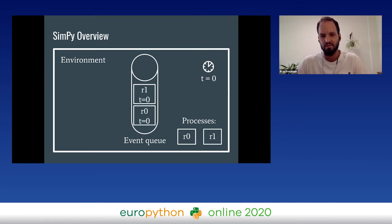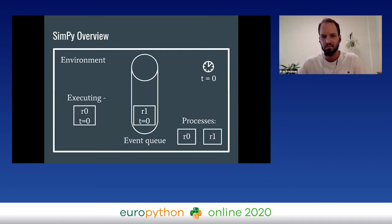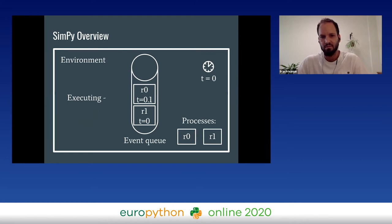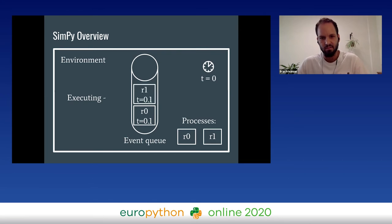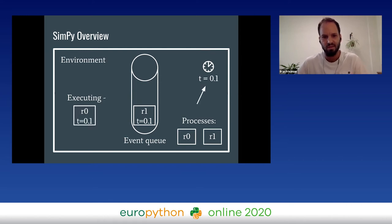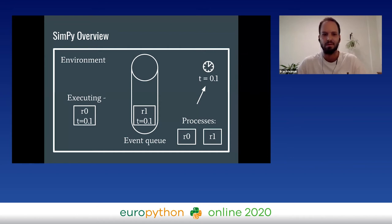When we start the environment, it takes the first event from the queue, calculates the new state of the robot, and before it's done, it adds the next event for that robot back in the queue. Then it takes the first event from the queue again — this time belonging to robot one — calculates its new state, and adds robot one's next event. Then it takes the next event, which belongs to robot zero but now at time 0.1, and updates the clock to 0.1. That is the basic idea of how SimPy works.